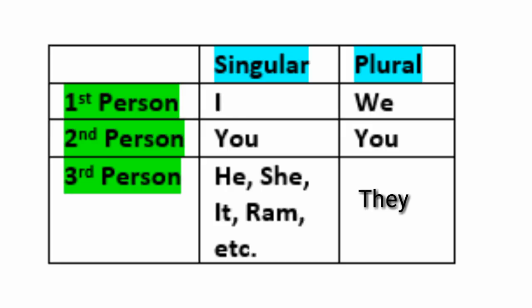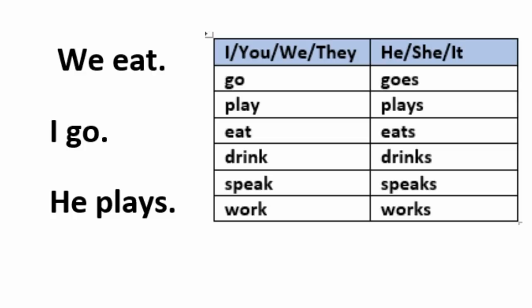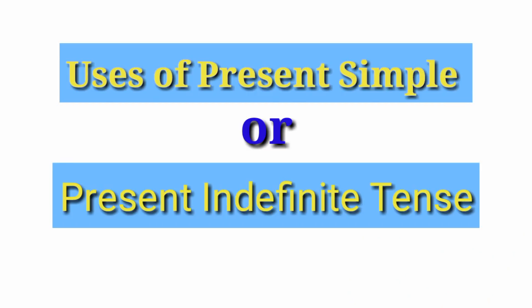The third person singular number takes a special verb form. For example: 'We eat', 'He plays' — in present indefinite tense, the third person singular adds -s or -es to the verb.